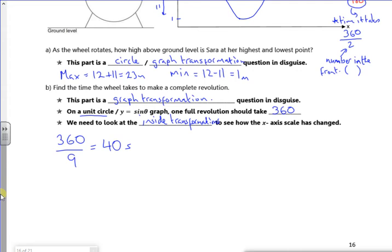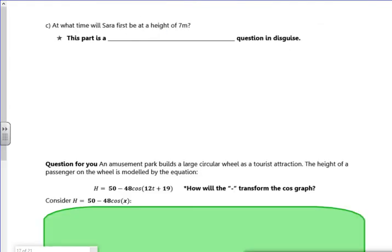The pack does it a slightly different way. Let's have a look at this one now. So let's have a look at Sage. So it says, at what time will Sarah be first at a height of 7 metres?